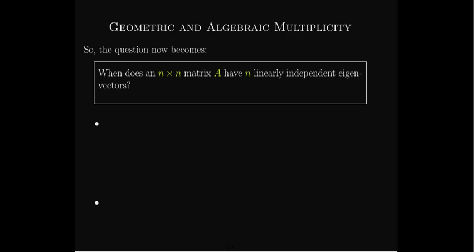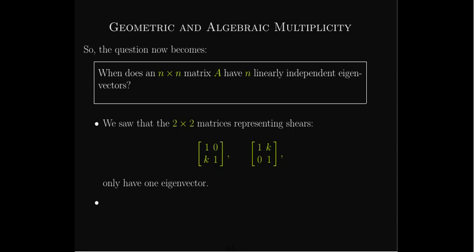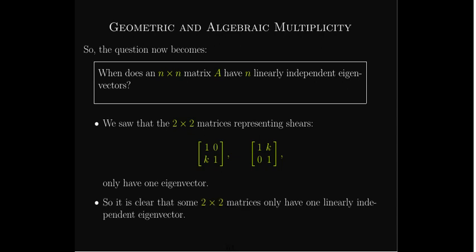The big supposition is that the matrix had N linearly independent eigenvectors. So we need to answer: when does a matrix have N linearly independent eigenvectors? The answer is not always. If we think back to shear matrices, we found they only have one linearly independent eigenvector — they're 2×2 matrices but only have one linearly independent eigenvector. So not all matrices are diagonalizable.